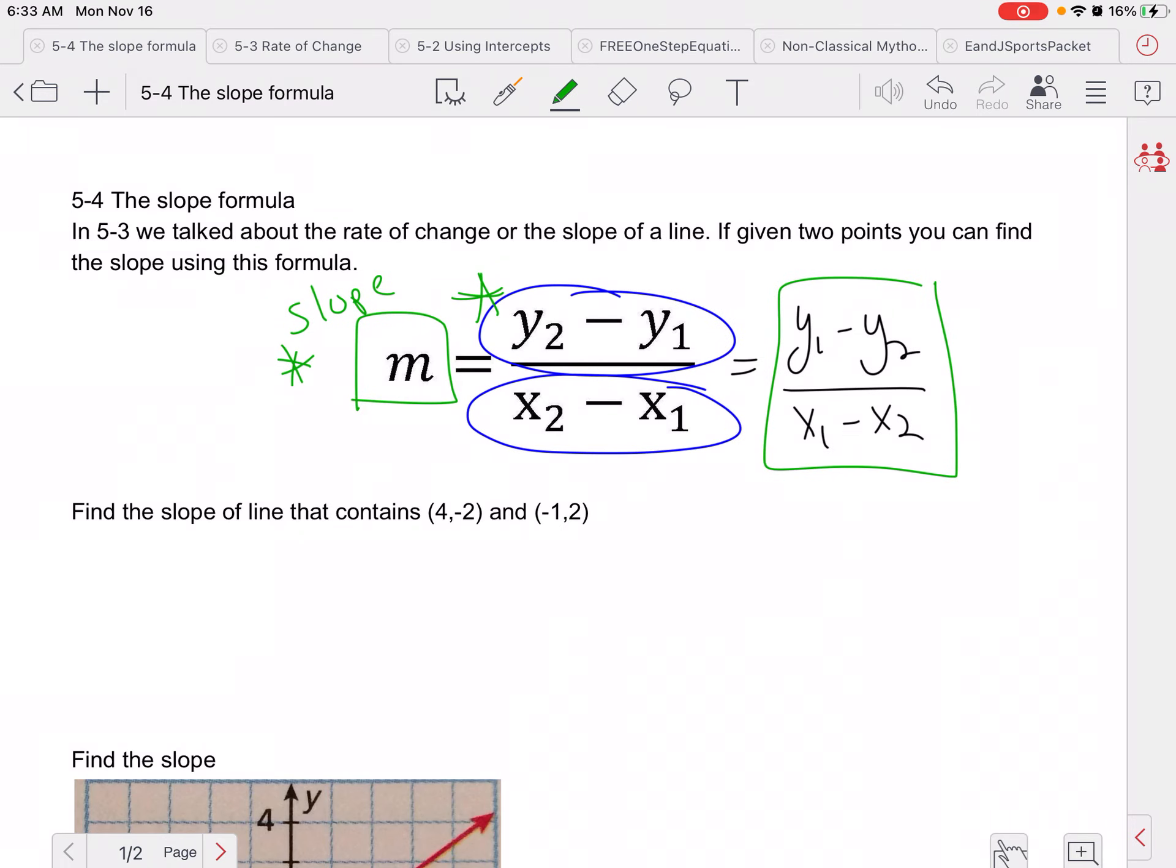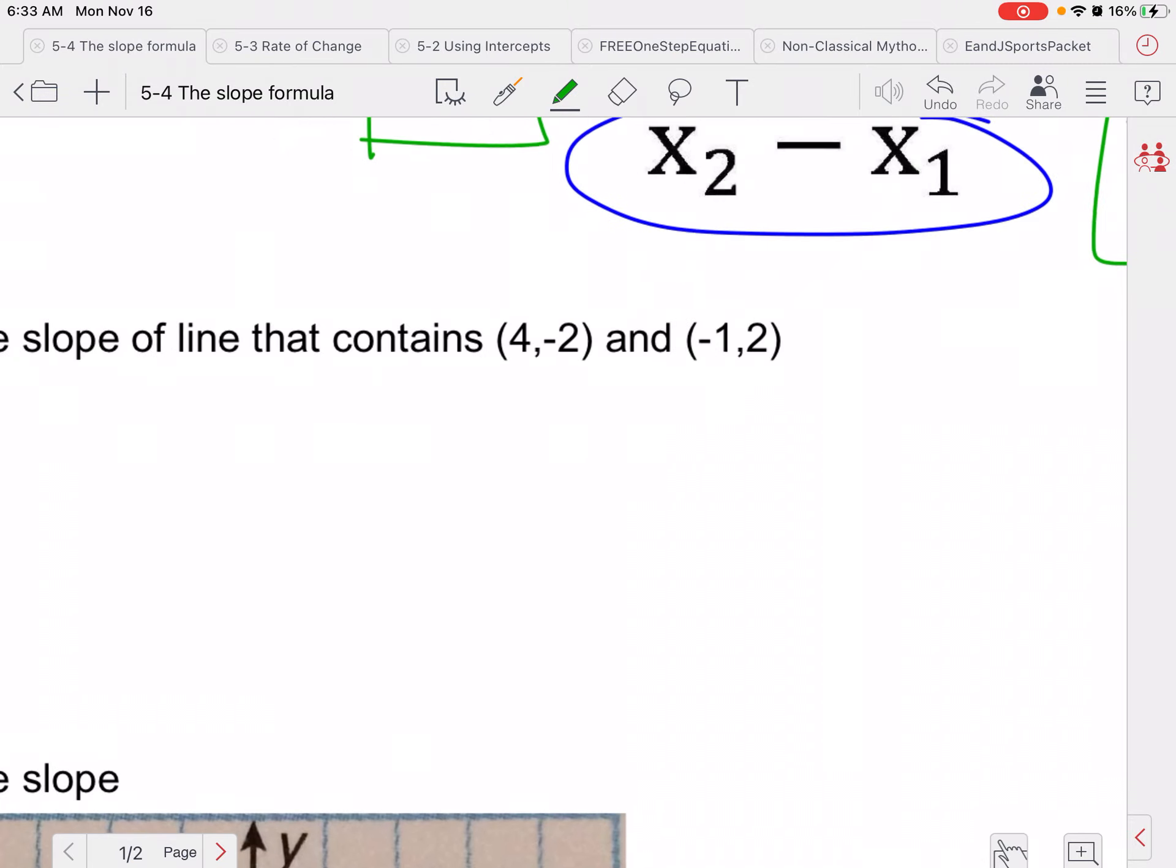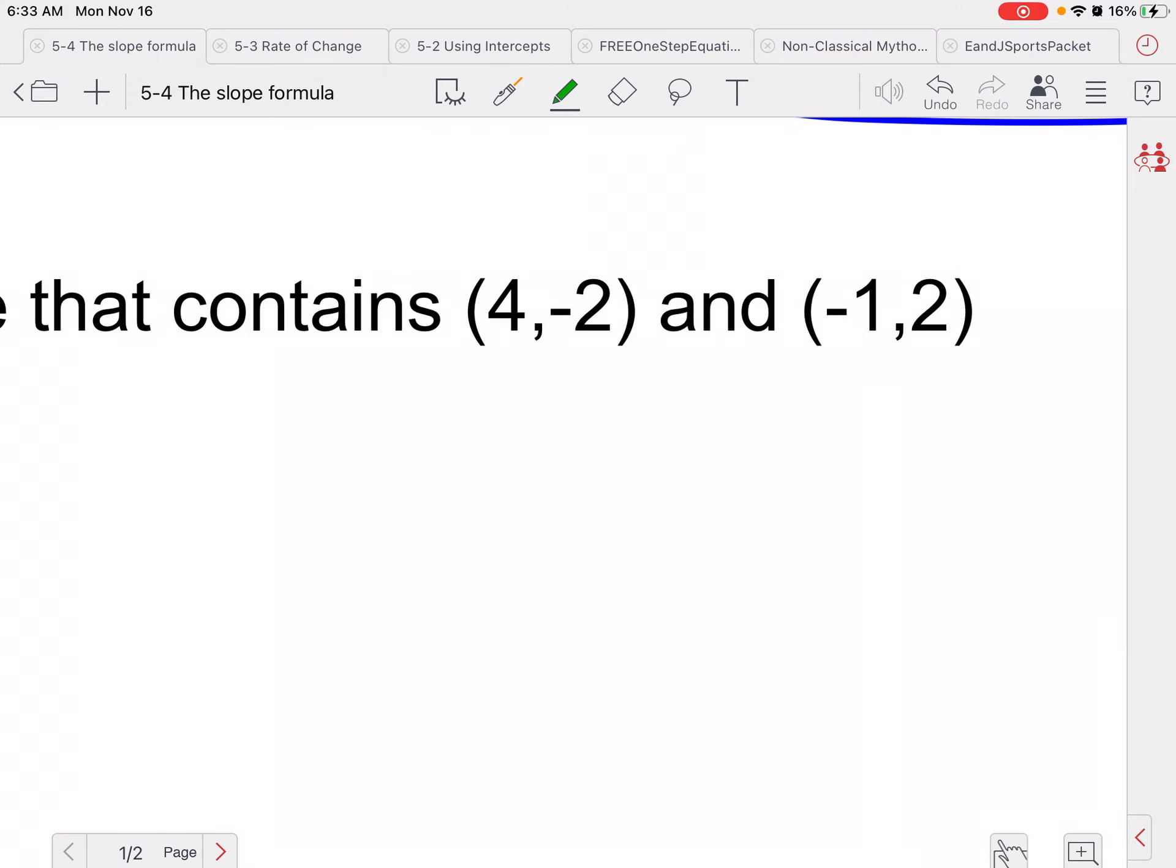Alright, so if we have two points here, I'm going to label these two points. We have 4, negative 2, negative 1, I'm sorry, negative 1, 2. So this would be x1 because x always comes first, and y1, x2, y2. That just helps you keep your information organized.